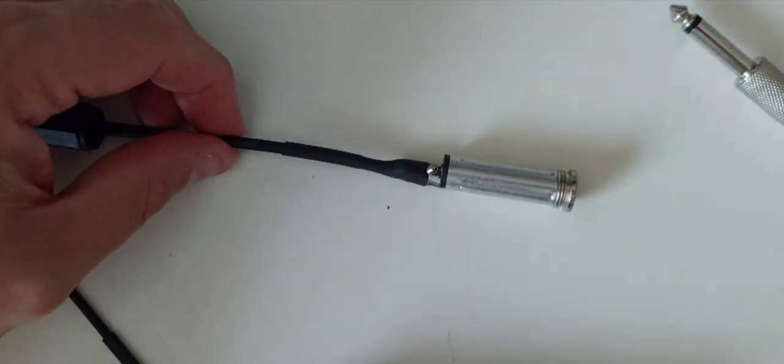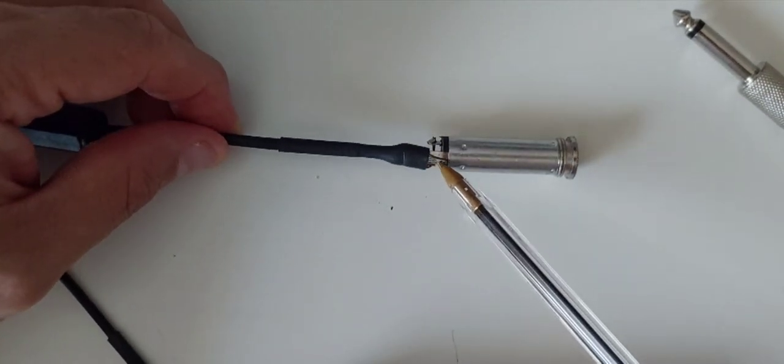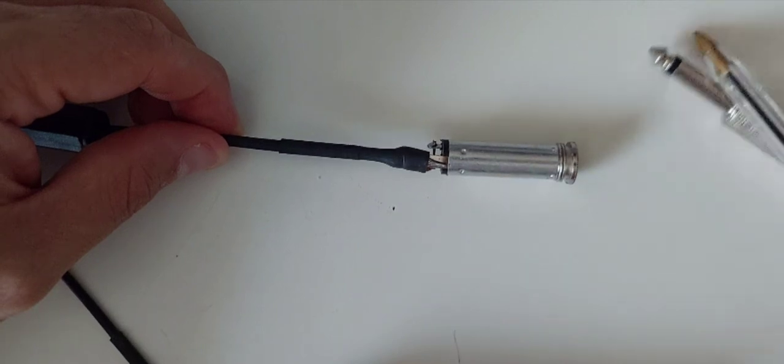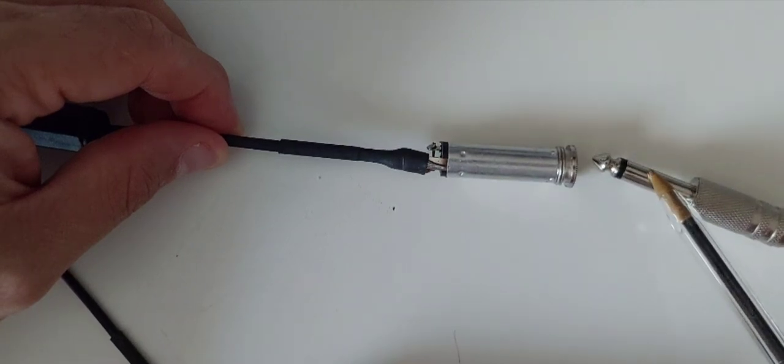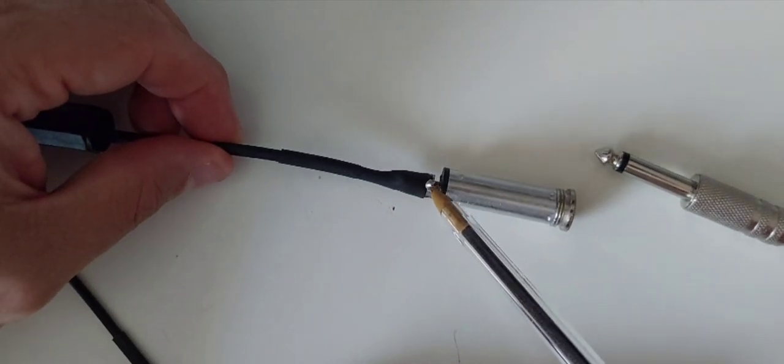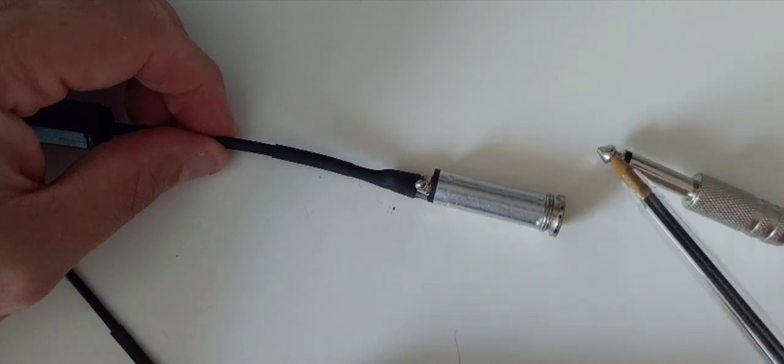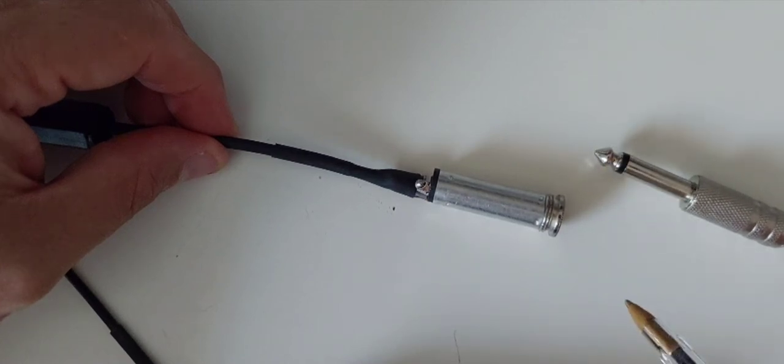The cable is a coax cable. The copper shield is soldered to the part that makes connection with the sleeve of the jack. The copper core is soldered to the connection which connects to the tip of the jack.